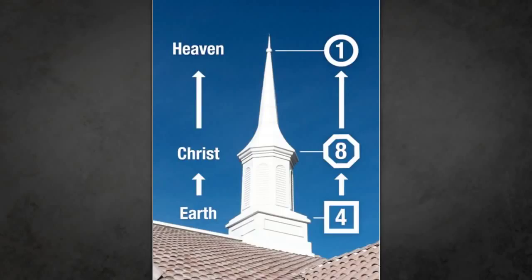Check out the base of the steeple — how it has four sides. The next level up, you have an octagon shape in the middle, with a circle up at the very top. We see that same order again: the square, the octagon, the circle. The square representing the earth, the circle representing heaven, and Christ as the mediator between heaven and earth.